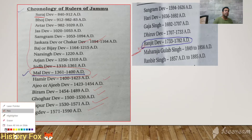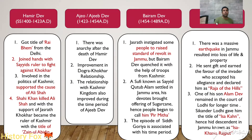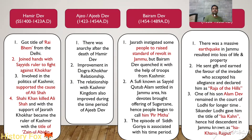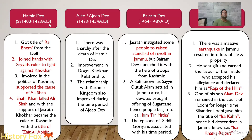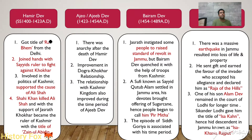Let us discuss the chronology of the Dev dynasty after Mal Dev. The time period of Mal Dev was 1400 to 1423. He had a very good relation with Delhi, and during this time period the rulers of Delhi were the Sayyids — the Sayyid dynasty were the rulers of the Delhi Sultanate.